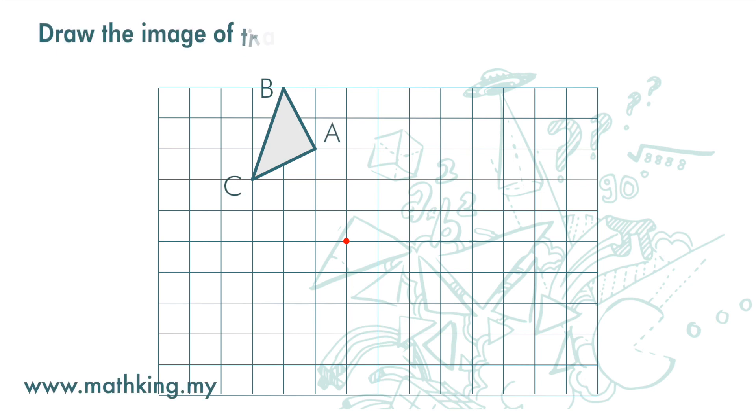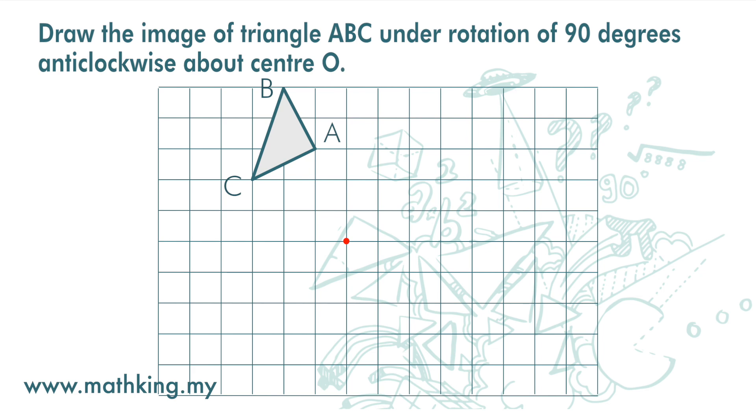Draw the image of triangle ABC under rotation of 90 degrees anticlockwise about center O. Here we are going to use the second method to draw the image.